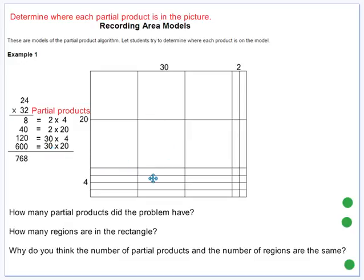So how many partial products did our problem have? We had 4, which is kind of the same as the amount of digits that we have in our two numbers that we're multiplying. How many regions are in the rectangle? This is our rectangle. How many different regions are there? Well, there are 4, where the 100 flats are, where these 10 longs are, where these 10 longs are, and where these units are. That's 4 different regions.